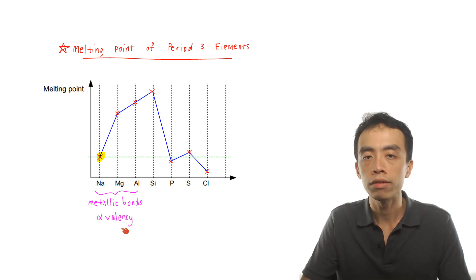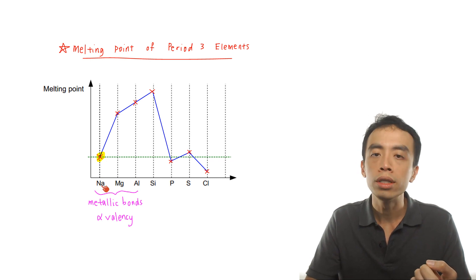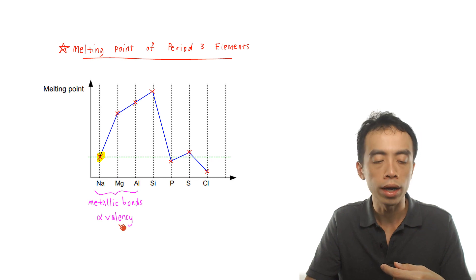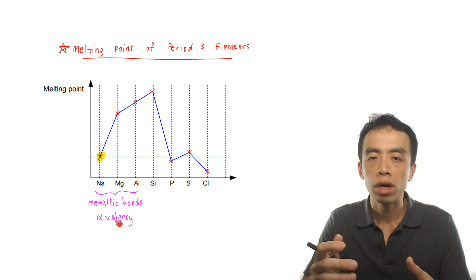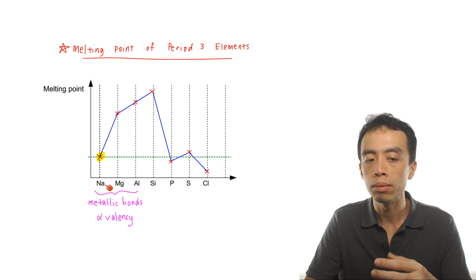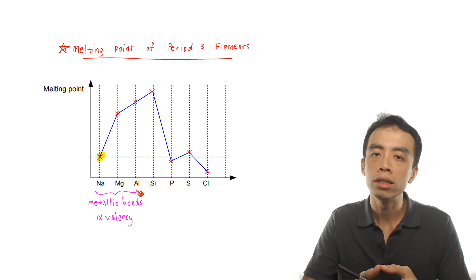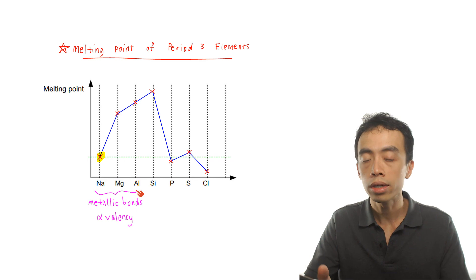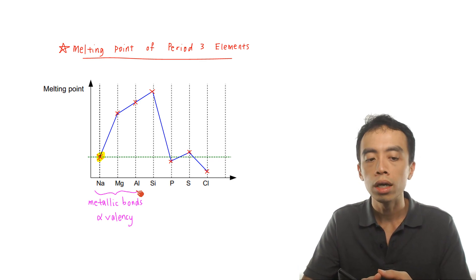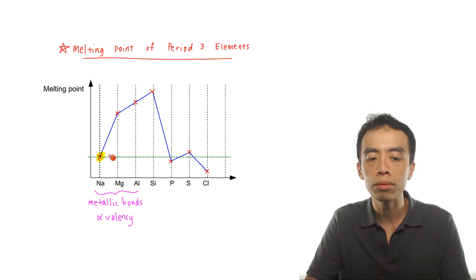Valency is the number of electrons each metal atom can delocalize into the sea of delocalized electrons. Sodium is in Group 1, so it delocalizes one electron, giving a valency of 1 and only a +1 cation, with a smaller sea of delocalized electrons — so the metallic bond is much weaker. Aluminum is in Group 13, so it has a valency of 3, forming Al³⁺ with a larger sea of delocalized electrons and a much stronger metallic bond. Therefore the melting point increases from sodium to magnesium to aluminum.